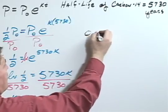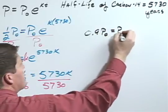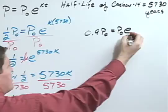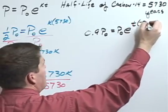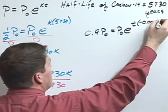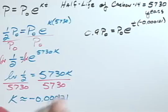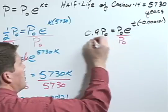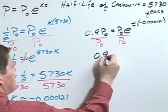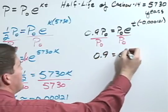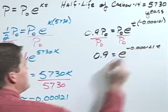So 0.9 P sub zero equals P sub zero E to the T times negative 0.000121. Again, dividing by P sub zero, I get 0.9 equals E to the negative 0.000121 T.